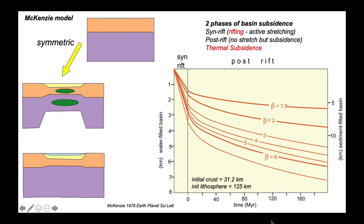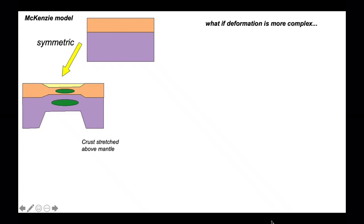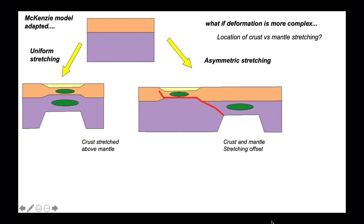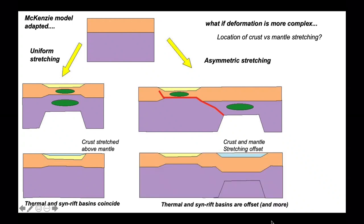In our study so far, we've looked at the uniform stretching model, where the crust is stretched directly above the mantle lithosphere. But what happens if that is offset, so the crust and mantle lithosphere stretch in different places? In the uniform stretching model, the thermal and syn-rift basins coincide.